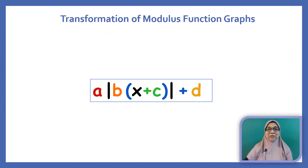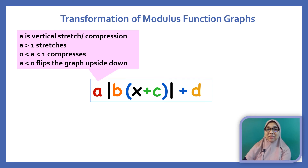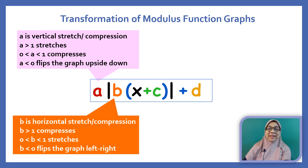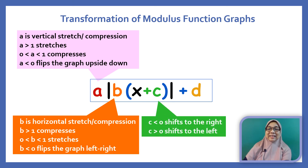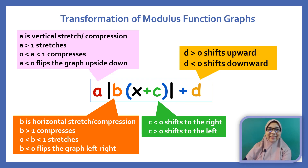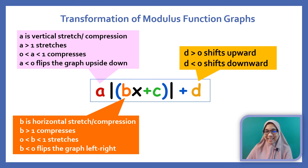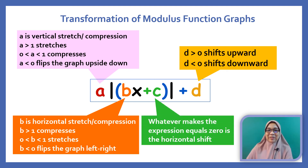The transformation rules for modulus function graphs are the same as the other functions. A is the vertical stretch or compression. B is the horizontal stretch or compression. C is the horizontal shifting. D is the vertical shifting. Using the second method, find the value of x such that Bx plus C equals 0. If x equals negative C over B, the graph shifts left; if x equals C over B, the graph shifts right.